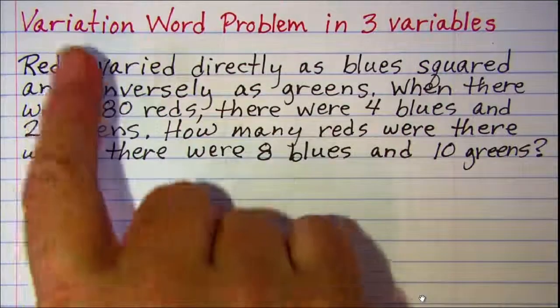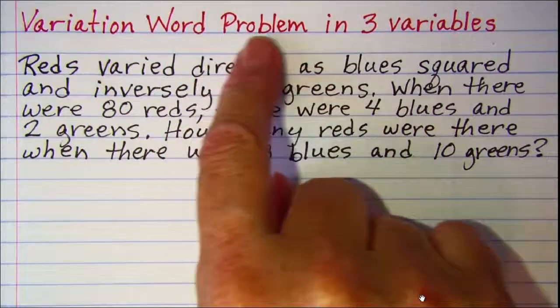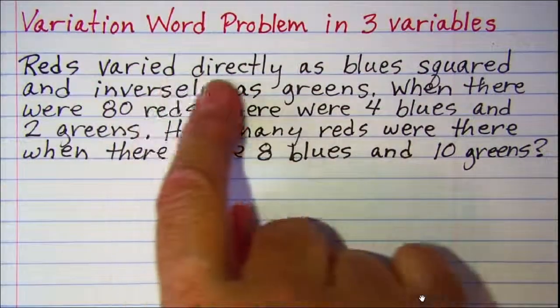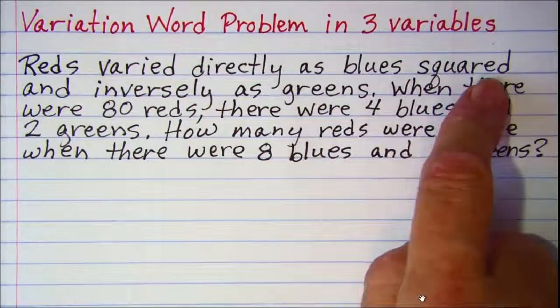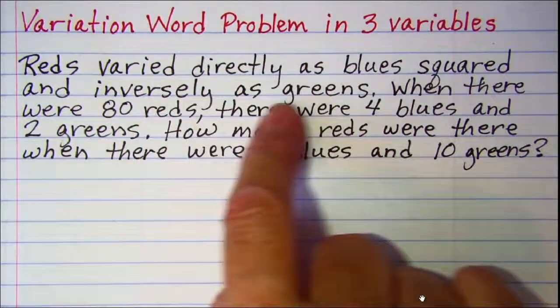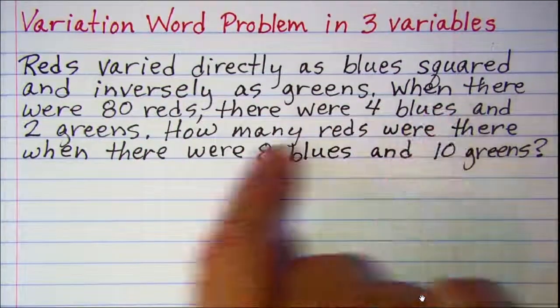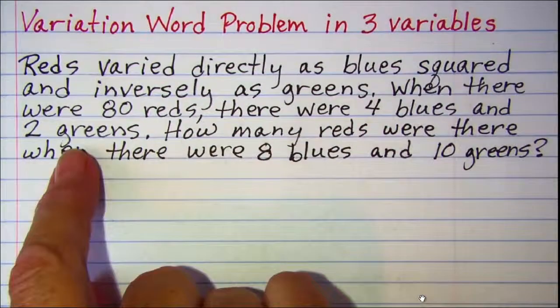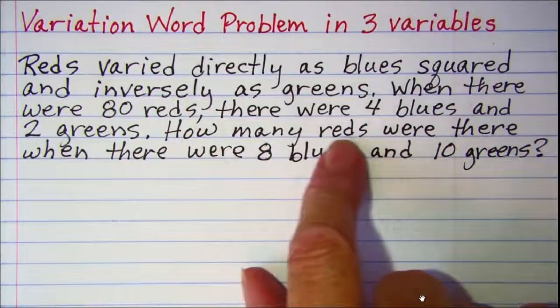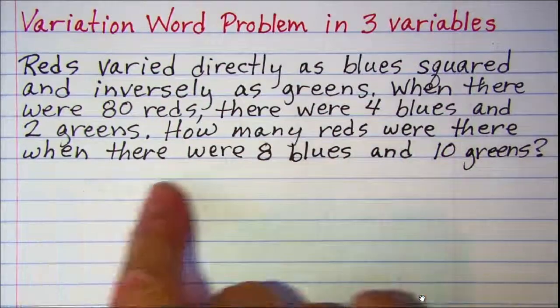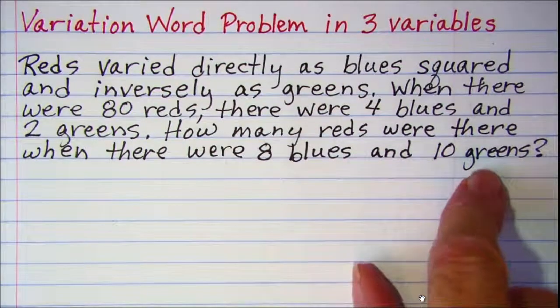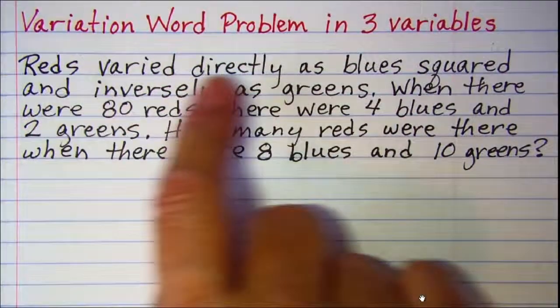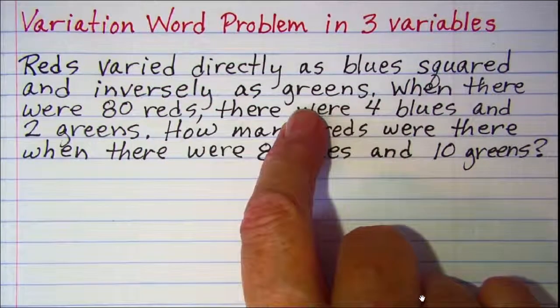In this video we'll be solving a variation word problem in three variables. Reds vary directly as blues squared and inversely as greens. When there were 80 reds there were 4 blues and 2 greens. How many reds were there when there were 8 blues and 10 greens?